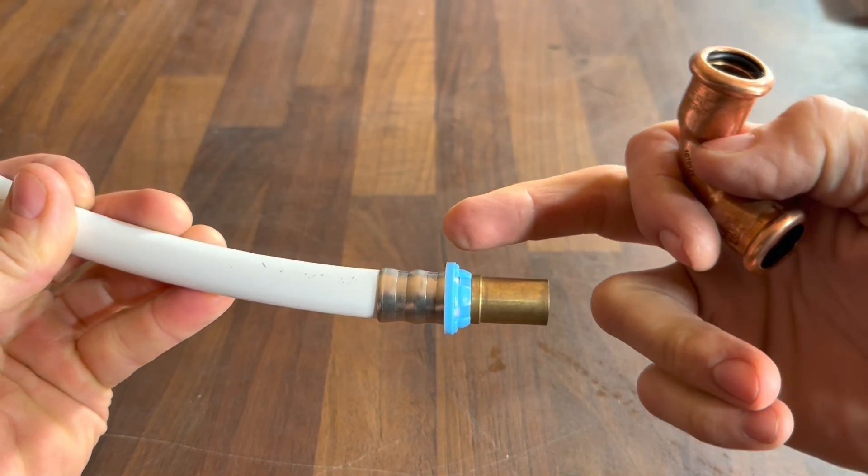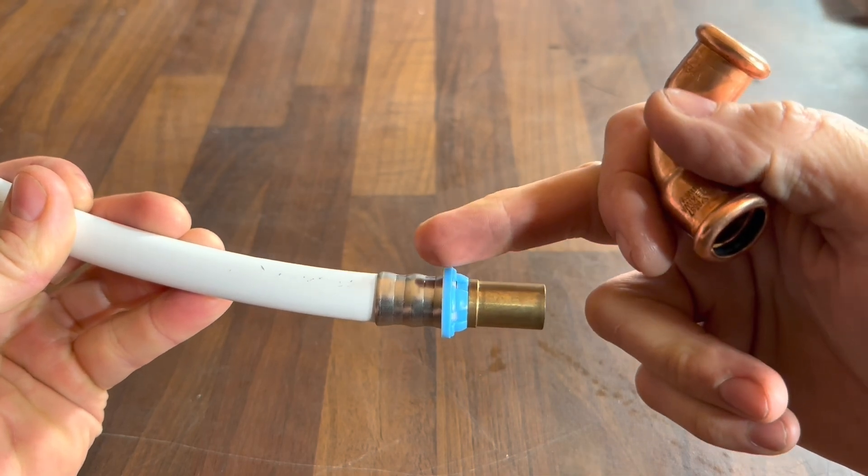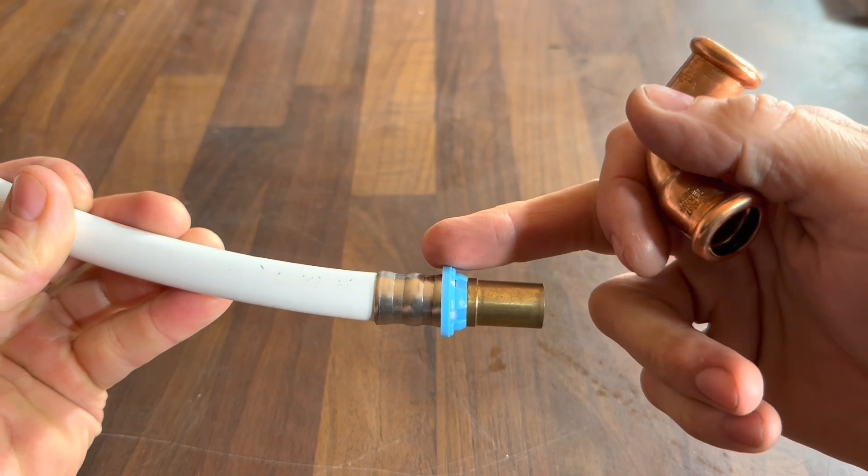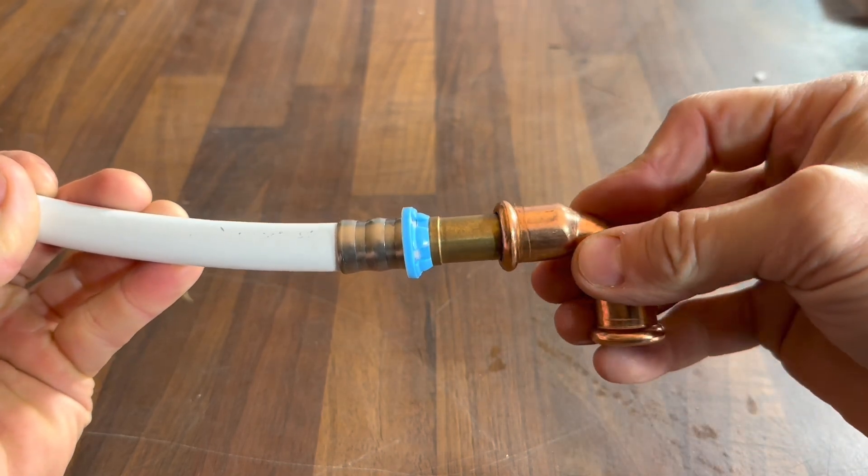Now if you are going to solder it, obviously we've got two rubber o-rings there, you would need to solder it first with the o-rings removed and then put it all back together. It's a bit long-winded so most guys will press straight onto that.